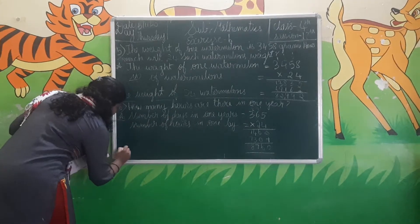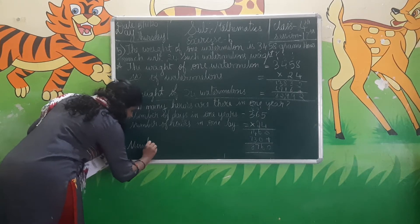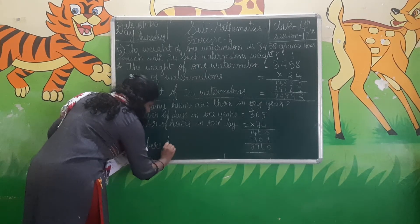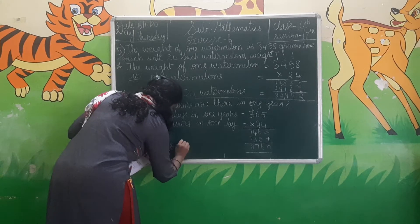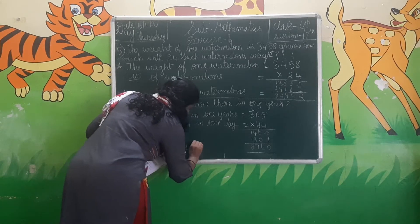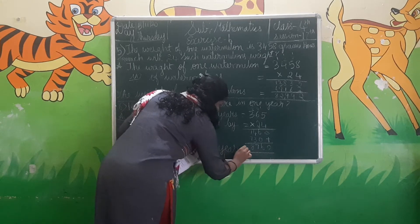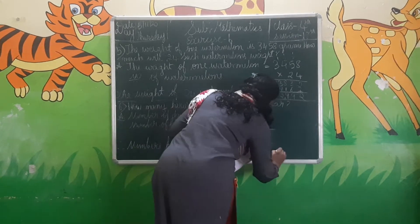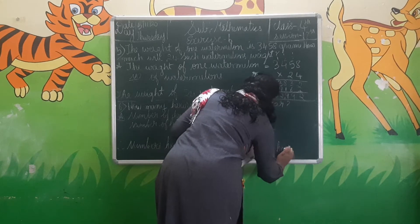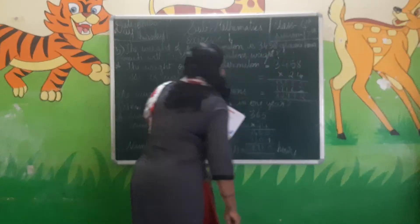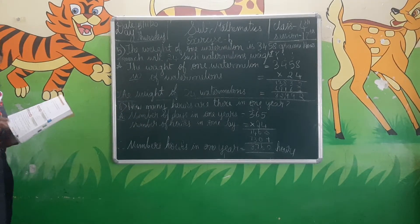Therefore, the number of hours in 1 year is 8,760 hours. In 1 year, we have 8,760 hours.